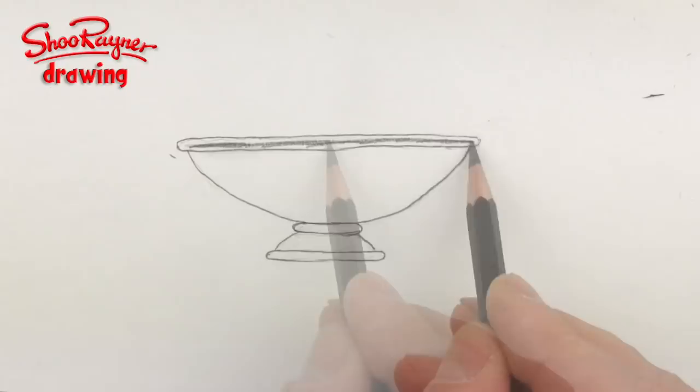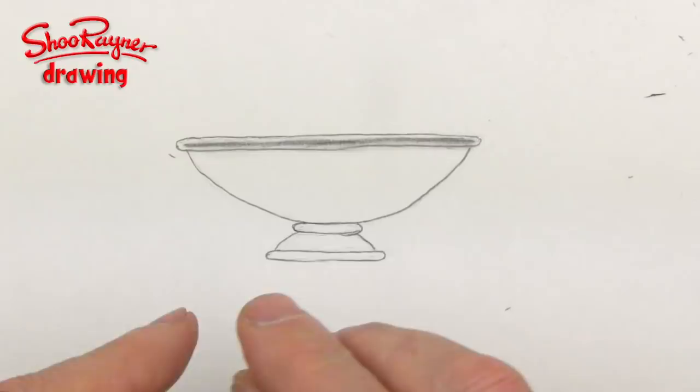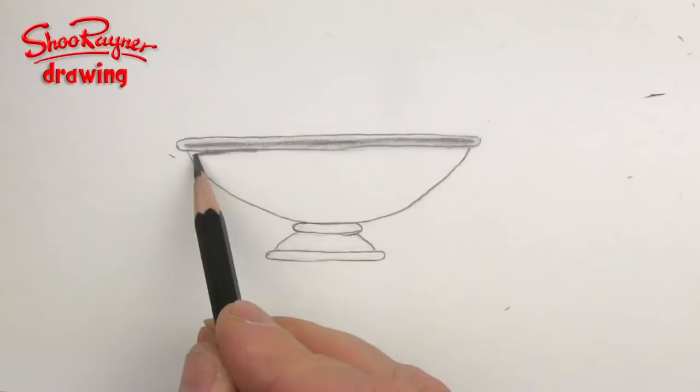Now you can get these professional blenders called stumps which are paper wrapped up very tight, but cotton buds work just as well and they might be easier to get hold of. So we can smooth that in there and then I think it's going to want to be quite dark underneath that rim where there's going to be a bit of shadow.